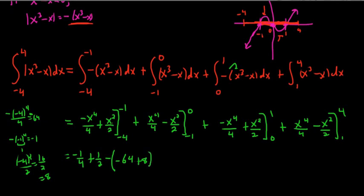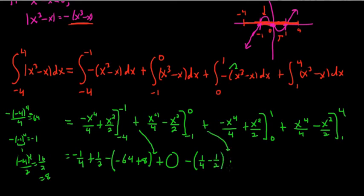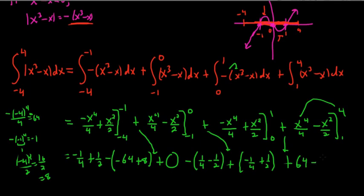Continuing: the second piece gives 0 minus (1/4 minus 1/2) from plugging in negative 1. The third piece gives (negative 1/4 plus 1/2) minus 0, since plugging in 0 makes everything vanish. The fourth piece gives (positive 64 minus 8) minus (1/4 minus 1/2), where plugging in 4 gives 64 and 4²/2 = 8.